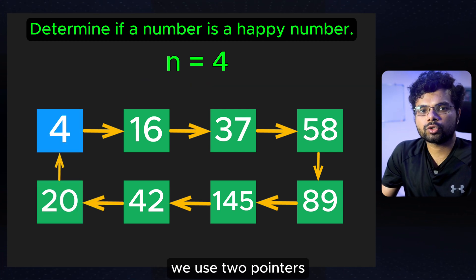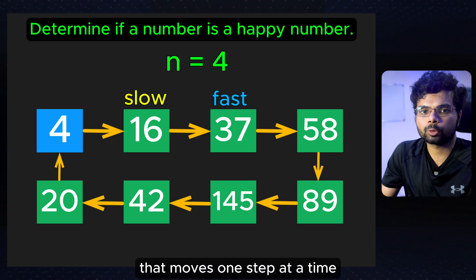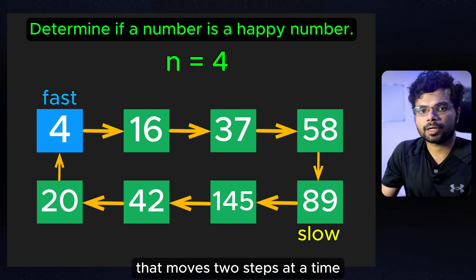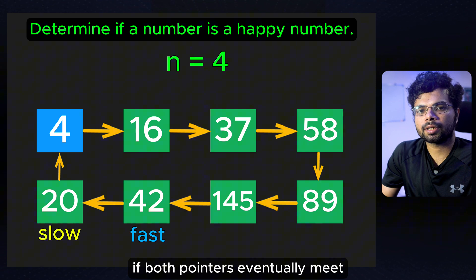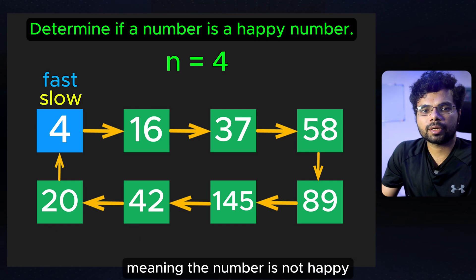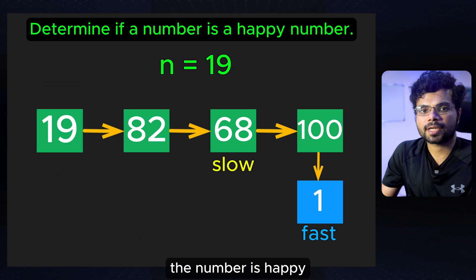To detect the cycle, we use two pointers. A slow pointer that moves one step at a time, and a fast pointer that moves two steps at a time. If both pointers eventually meet, you have detected a cycle, meaning the number is not happy. But if the fast pointer reaches 1, the number is happy.